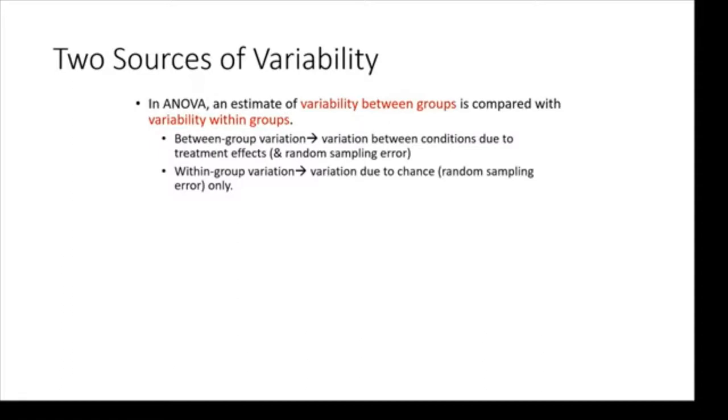So there are two sources of variability. In ANOVA we estimate the variability between groups and compare that with the variability within groups. So the between group variability is the variation between conditions due to treatment. And there's a little bit of random error happening in there but it's primarily due to treatment. Within group variability that's just due to chance. That's just random sampling error. How are people different by chance?